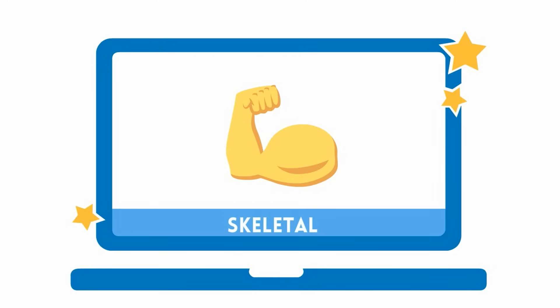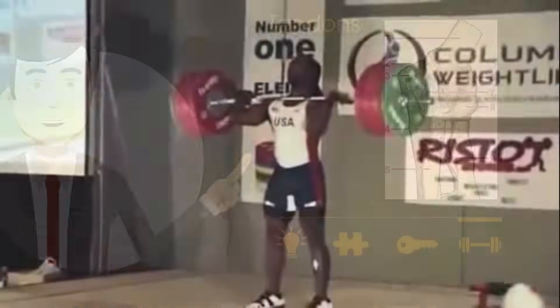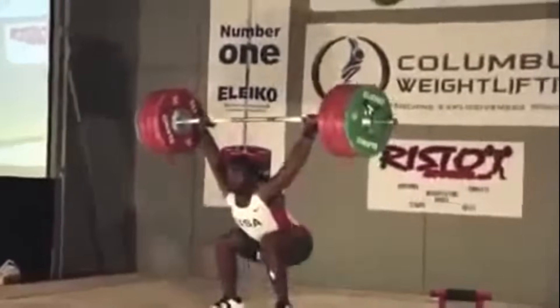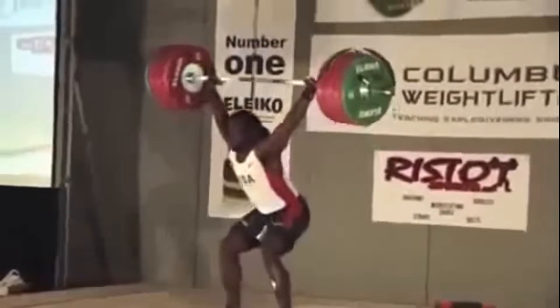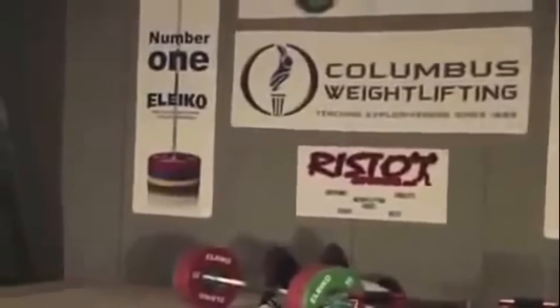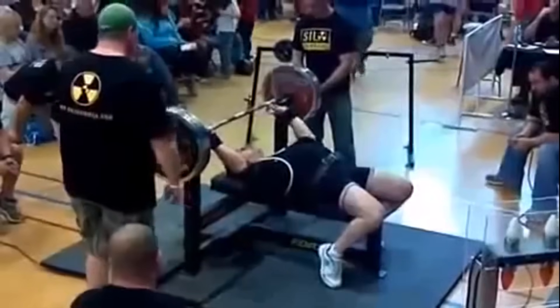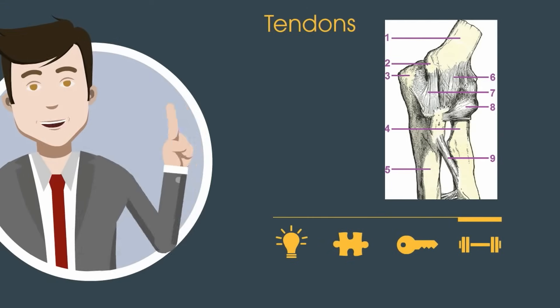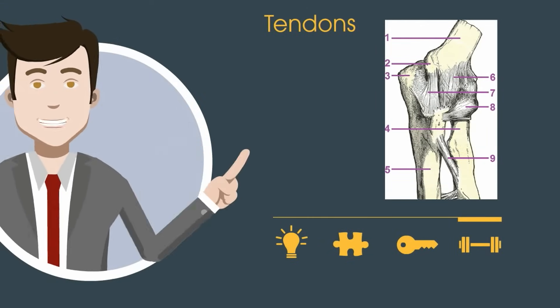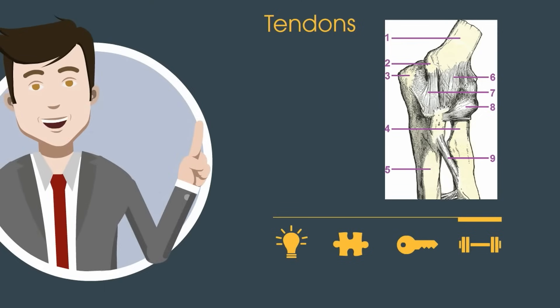Skeletal muscles are voluntary muscles that work with bones in order to help us move around. When most people think of muscles they think of skeletal muscles. Skeletal muscles are attached to bones by tough connective tissue called tendons. We have over 600 different skeletal muscles.